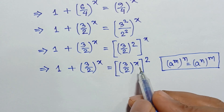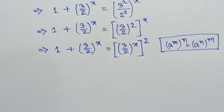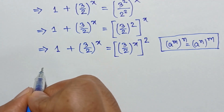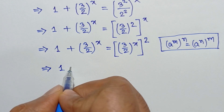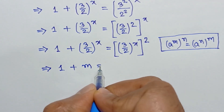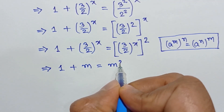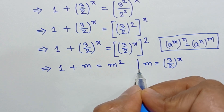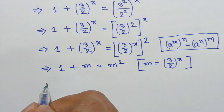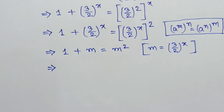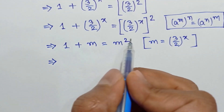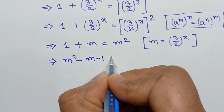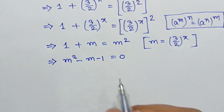We can write 1 plus M as M, and the right side as M squared, where M equals (3 over 2) to the power x. Taking the left side to the right side, we get M squared minus M minus 1 equals 0. This is a quadratic equation.